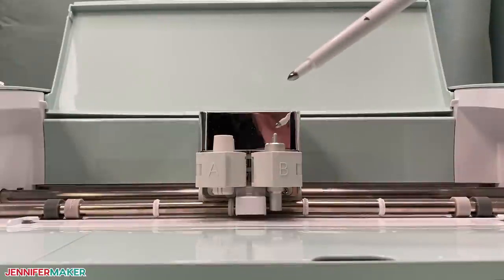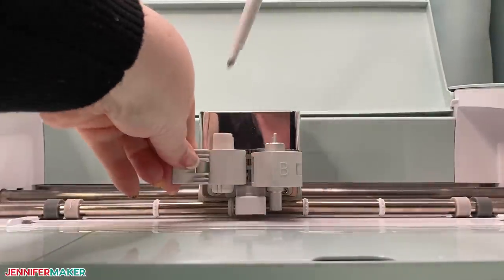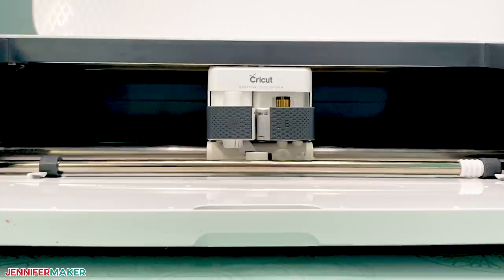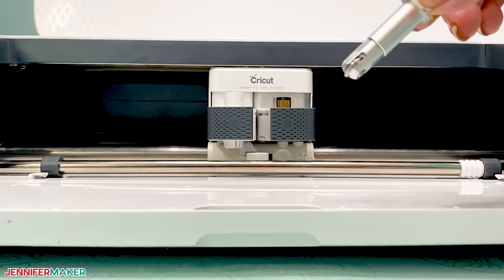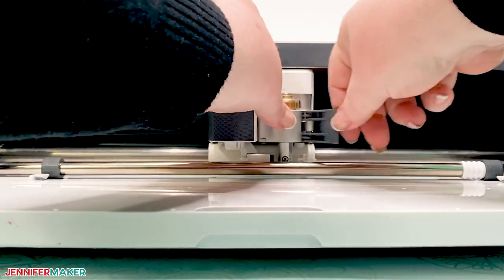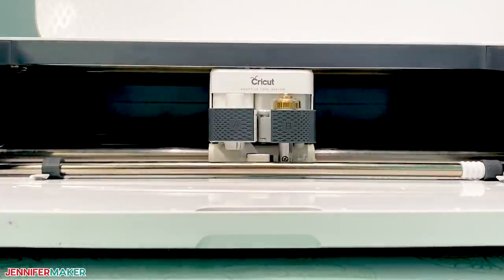If you're using a scoring stylus, insert it now into clamp A on your Cricut Explore or Maker. If you're using a scoring wheel, place your single scoring wheel into clamp B on your Cricut Maker. Yes, these two tools go in different clamps. But just remember you only need one, either the stylus or the wheel.